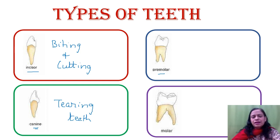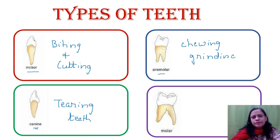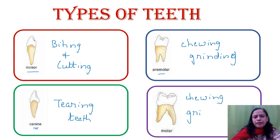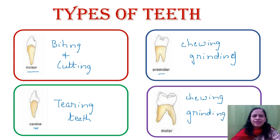Next are the premolars. They help in chewing and grinding the food. Whatever chewing and grinding of food needs to be done is performed by both the premolars and the molars. So both chewing and grinding are done by the molars and the premolars. That explains the four types of teeth.